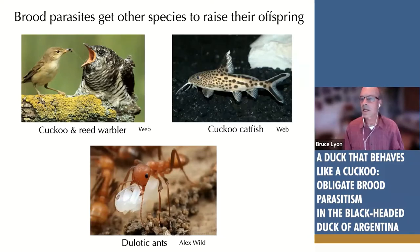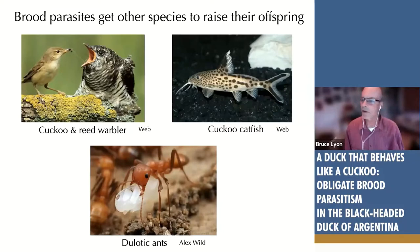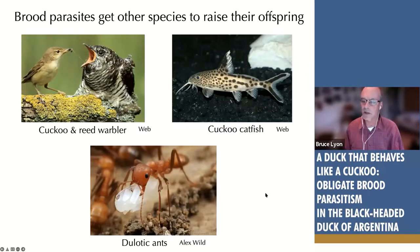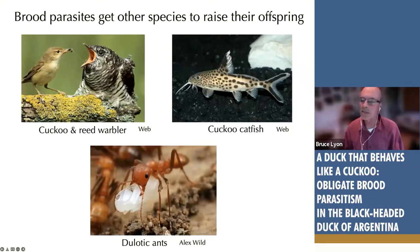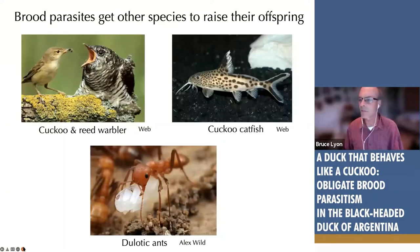Brood parasites get other species to raise their offspring, and this has evolved independently in lots of different groups. It's common and well-studied in birds, like the cuckoo and reed warbler. There's a catfish that is a professional parasite — it gets its eggs inside the mouth of mouth-brooding cichlid fish. In social insects like ants, so-called slave-making or dulotic ants, forms of reproductive parasitism are extremely common. These are all organisms that parasitize the parenting behavior of other species and basically get parental care for free.